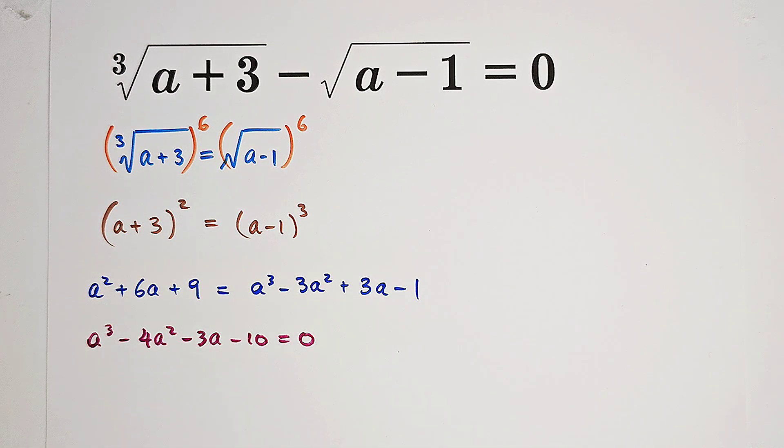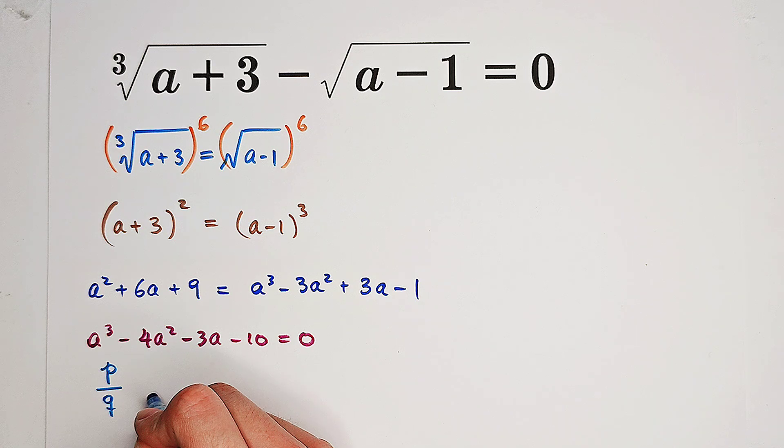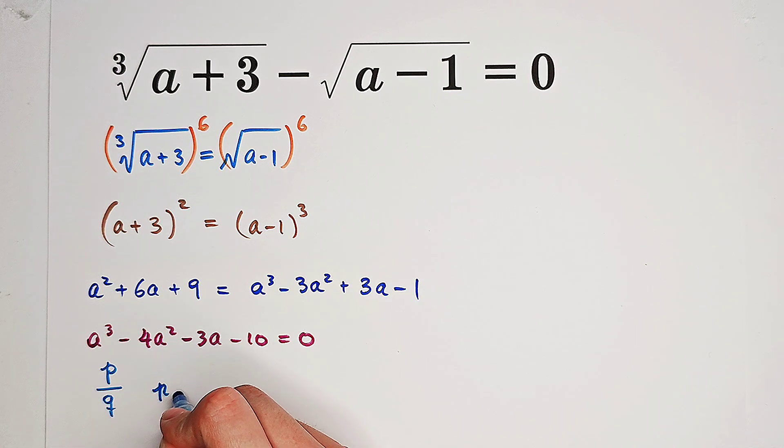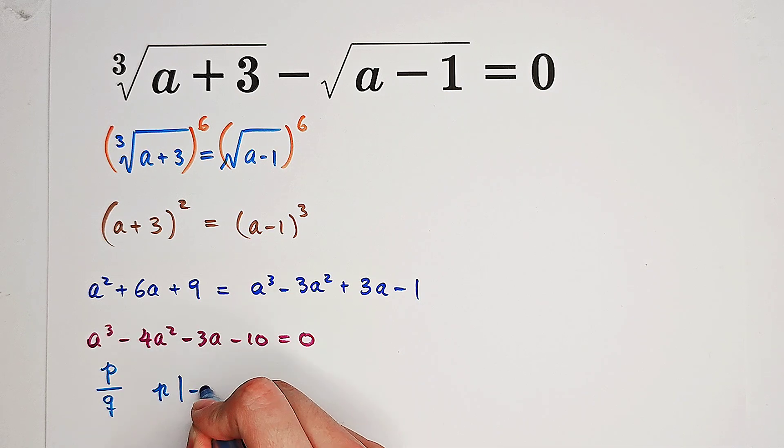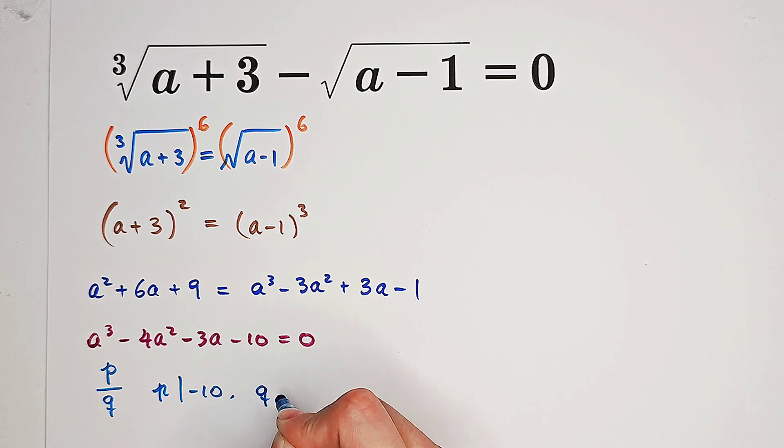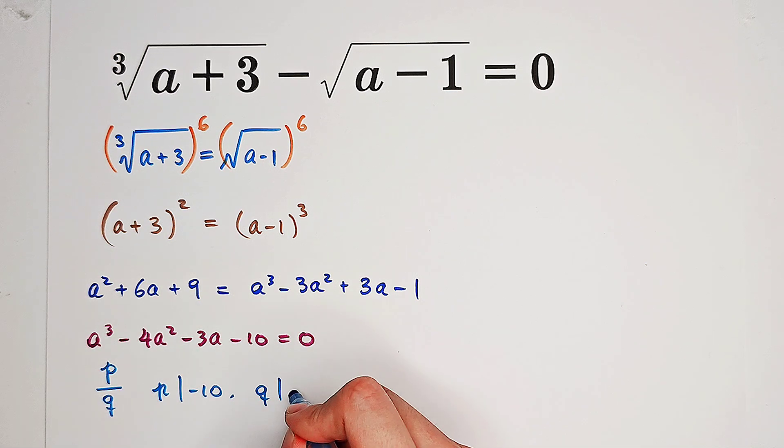Now it is equivalent to a cubed minus 4a squared minus 3a minus 10 equals 0. Now what we're going to do is to examine the rational root. If we have a rational root, for example p over q, then according to the rational root theorem, p has to be a divisor of negative 10 and q, the divisor of the coefficient of a cubed, which is 1.